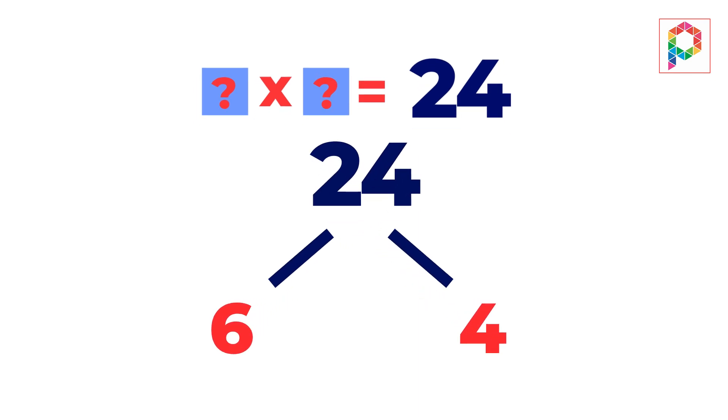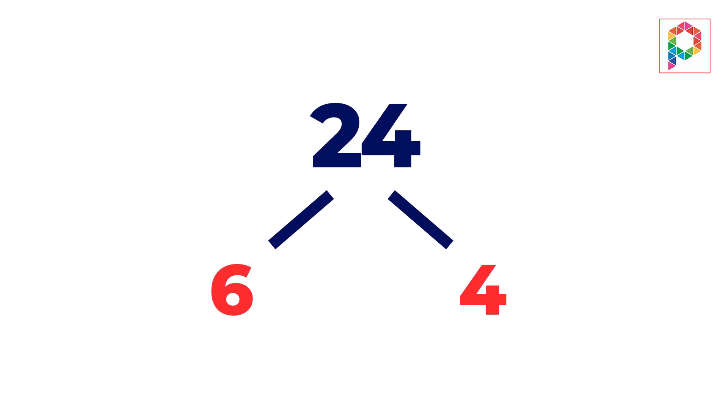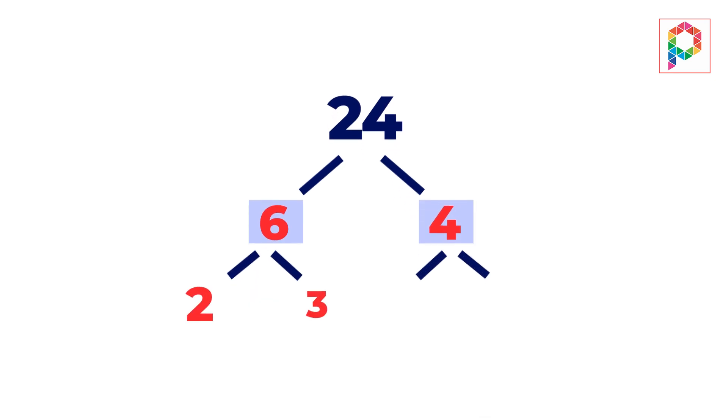Let's start with 24. What two numbers multiply to 24? 6 times 4. Good! Now break down 6 and 4.